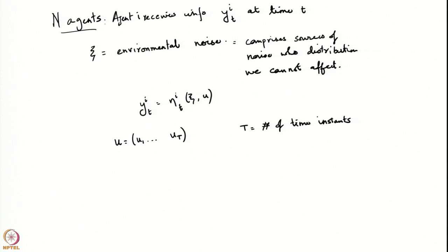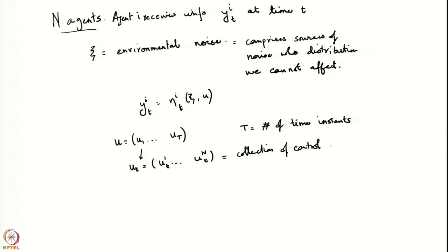Notice that we have changed the notation somewhat: earlier N was the time horizon, now T is the time horizon. Now u is u^1 to u^T, where each u^t is itself comprised of u_1^t to u_N^t — that is, the collection of control actions of the N agents at time t.